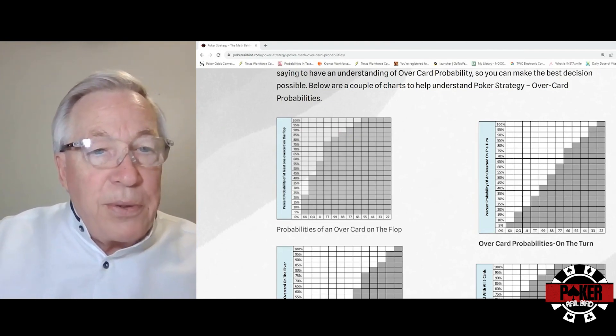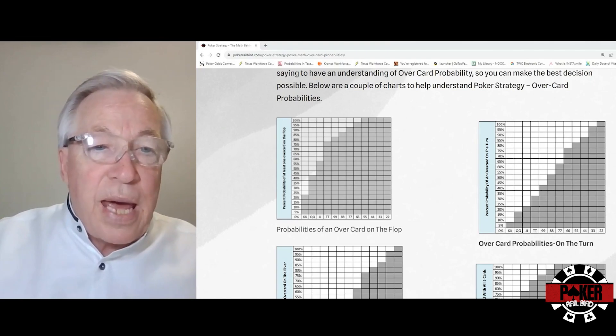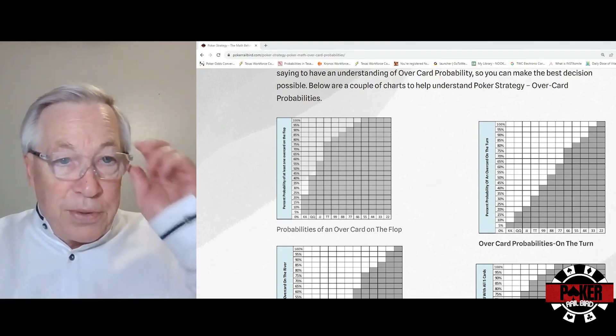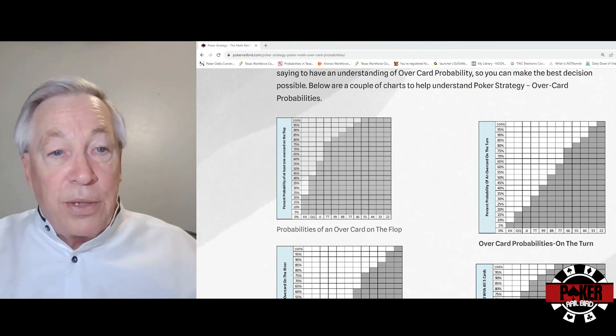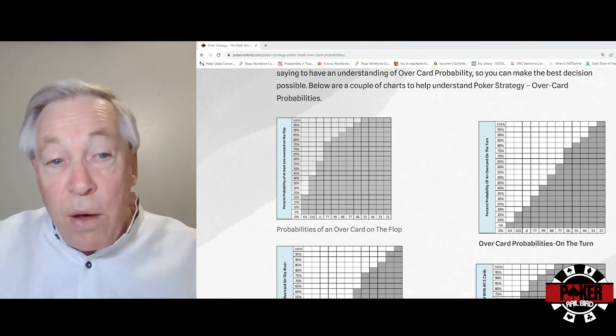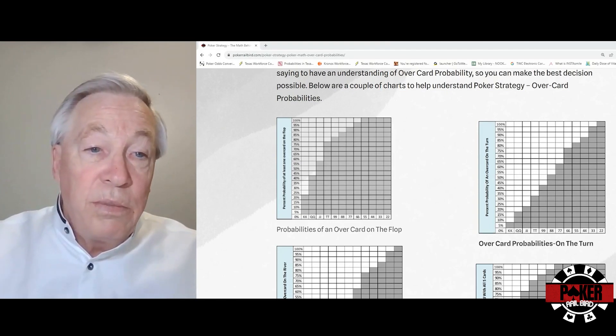You'll flop a set about 12 percent of the time, or 7.33 to one to do so. If you do flop a set, then you've got a 33 percent chance, or about two to one odds, of making a boat. If you don't flop a set, then those pocket sevens are probably in trouble.